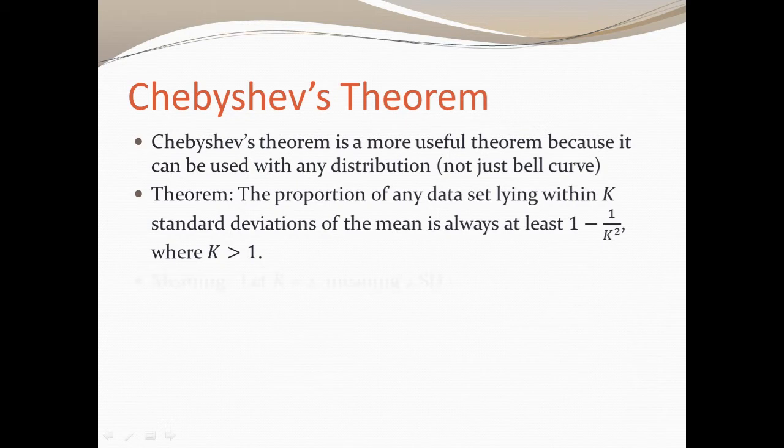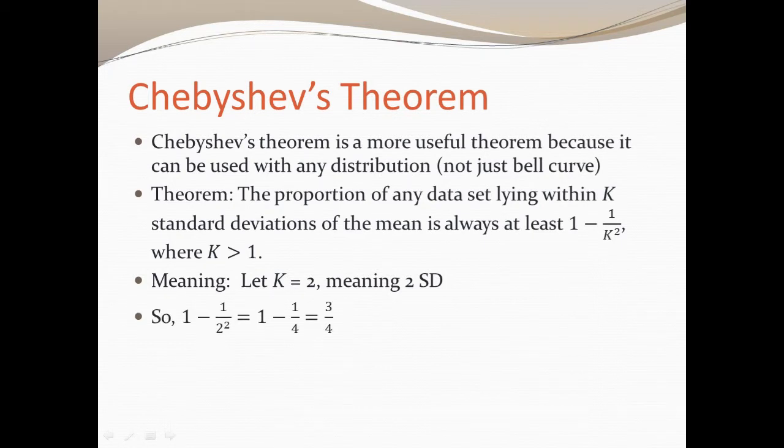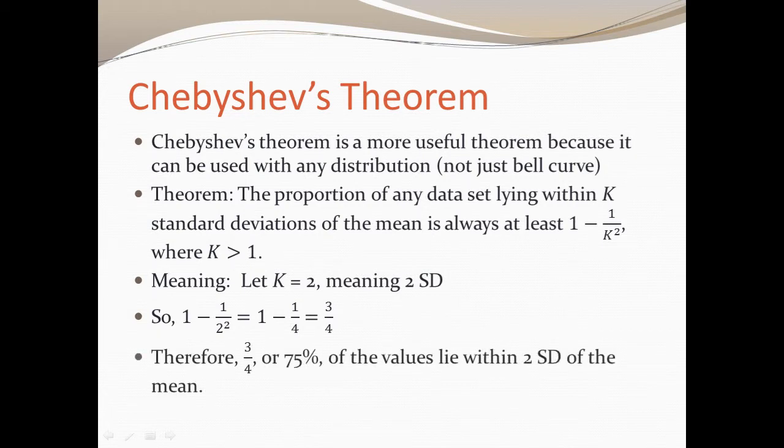That's a lot to take in, but if you look at the example below, let's let K equal 2, so we're talking about two standard deviations. We'll apply it to the formula that comes with Chebyshev's theorem. So it's 1 minus 1 over 2 squared, which is 1 over 4. So 1 minus 1 fourth gives us 3 fourths. According to Chebyshev's theorem, that means 3 fourths of our values, meaning 75% of our values, should lie within two standard deviations of the mean.